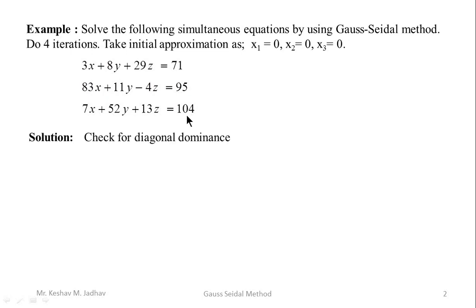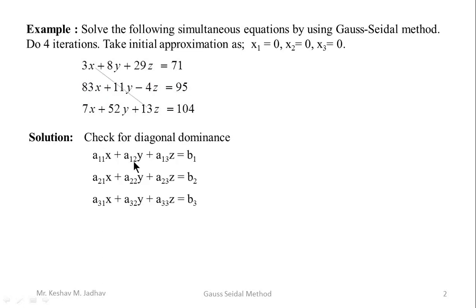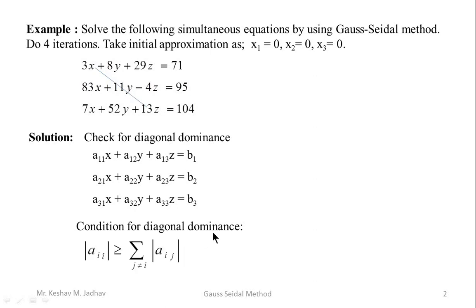We have to solve these equations by using the Gauss-Seidel method. For that, first we have to check for diagonal dominance. Consider a general set of linear simultaneous equations. The condition for diagonal dominance is: |a_ii| ≥ Σ|a_ij| for j ≠ i, and this holds for all values of i.